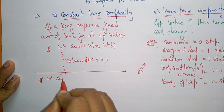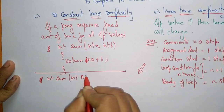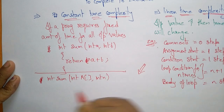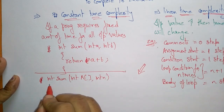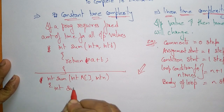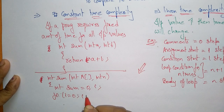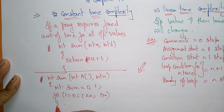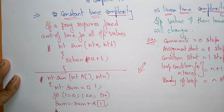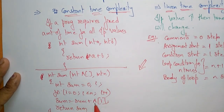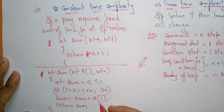Consider the function int sum(int a[], int n). We declare int sum = 0, i. Then a for loop: for i = 0, i less than n, i plus plus. Inside the loop: sum = sum + a[i]. Then return sum. This program calculates the sum of array elements, where the i value goes from 0 up to n minus 1.